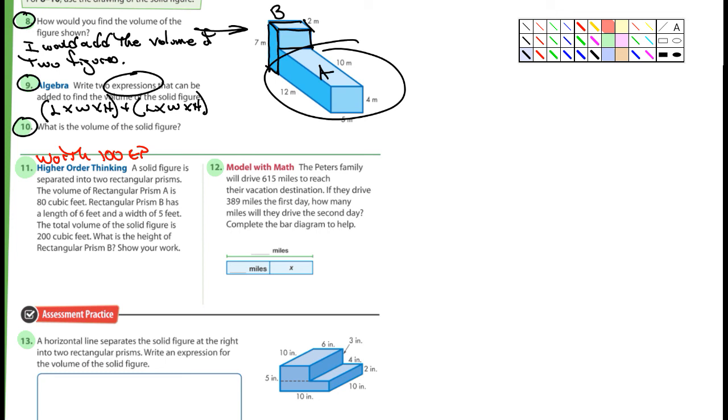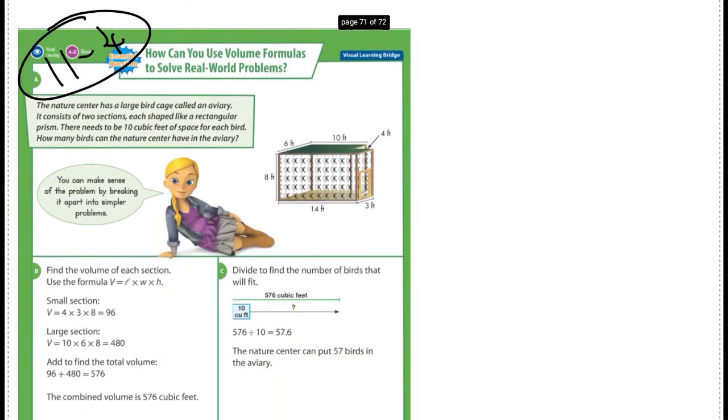Number 11 here, this one I want you to think about and do it on your own. It's going to be worth 100 group points tomorrow. I'm going to pull sticks. We'll see who can get it. I want you to do 12. I want you to do 13.